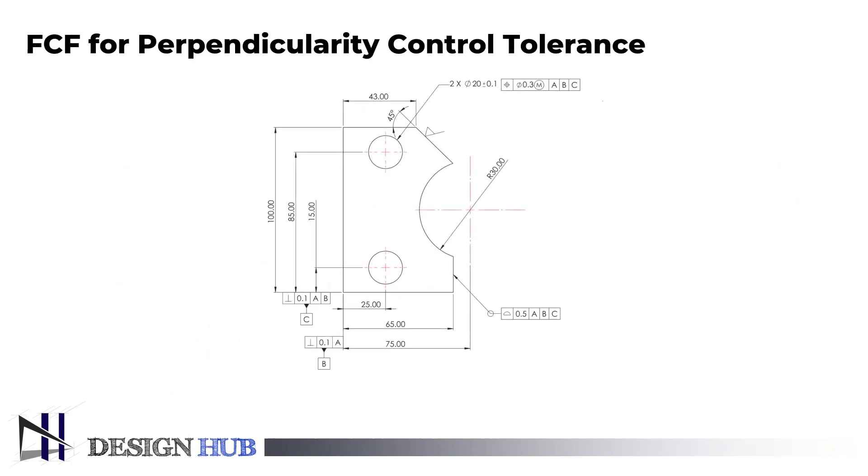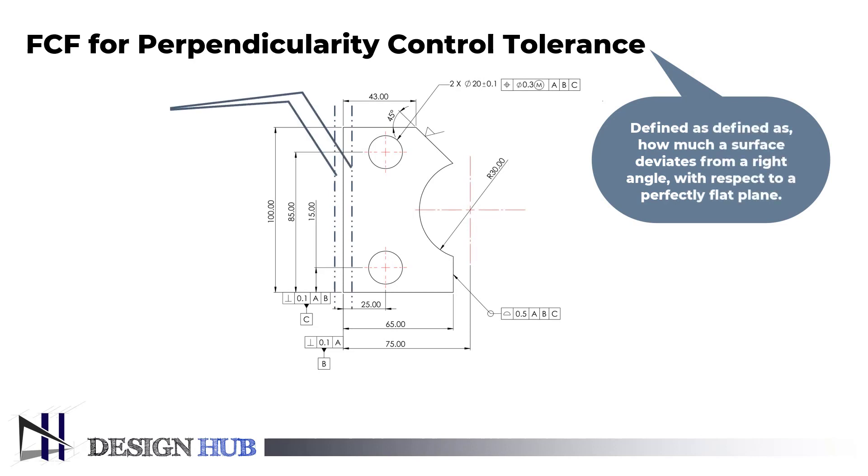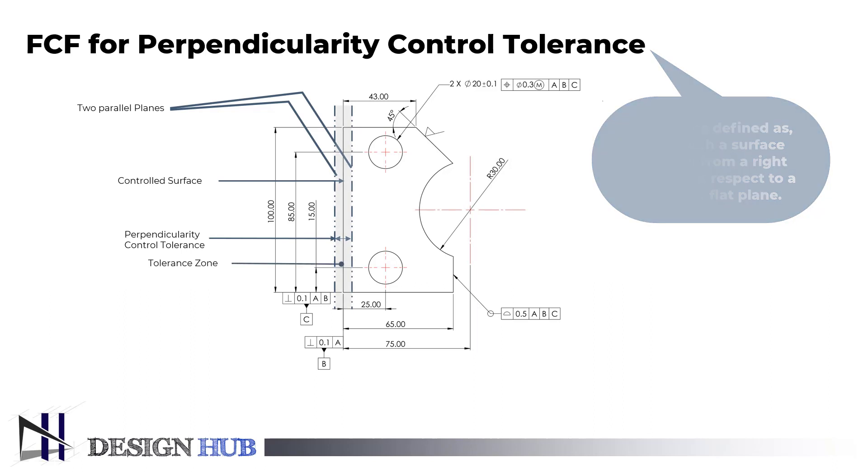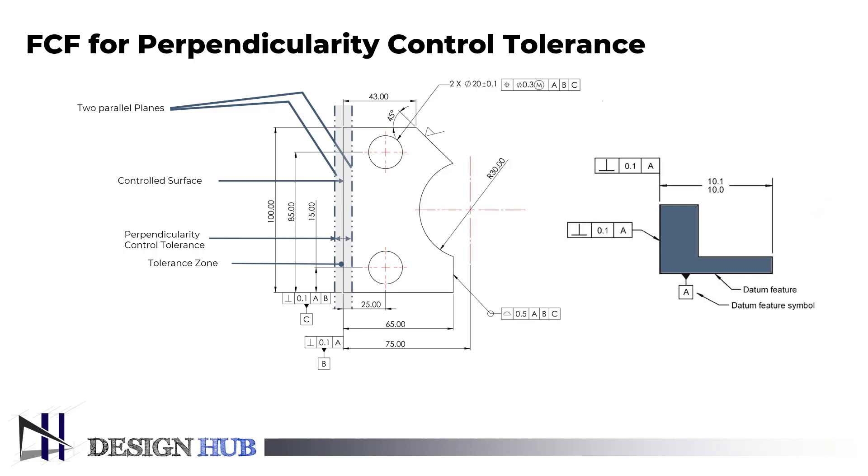Now, we will see a feature control frame for perpendicularity tolerance, which is an orientation control type tolerance. A perpendicularity tolerance can be defined as how much a surface deviates from a right angle with respect to a perfectly flat plane. The value of the perpendicularity control tolerance is the distance between the parallel planes. Whilst machining, the surface that is being controlled must be contained within the tolerance zone's defined volume. The volume between two parallel planes that are perpendicular to the datum plane is known as the perpendicularity tolerance zone. It is applied when controlling a surface.